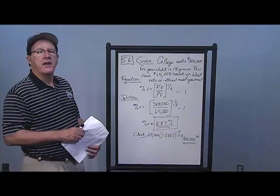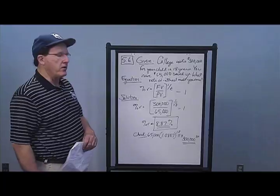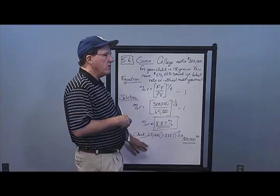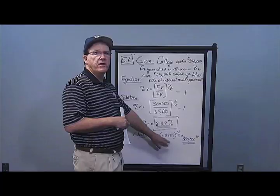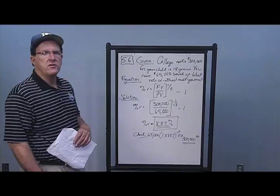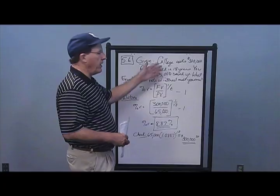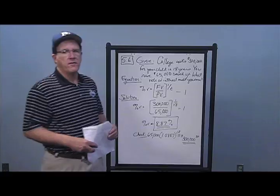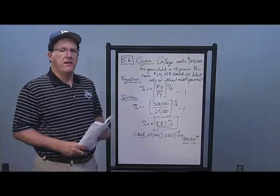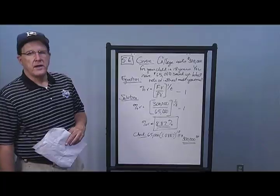You can check this answer by plugging numbers into the future value formula: $65,000 times (1.0887) to the 18th power should return approximately $300,000. That's a very practical use of our future value / present value lump sum time value of money equation. There are your answers for chapter five.